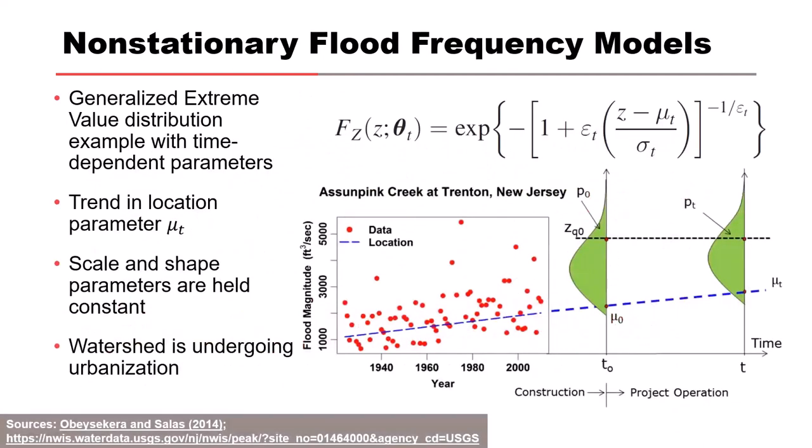Here's what non-stationarity looks like. This is a basic example showing flood magnitude — annual instantaneous peaks over time with a trend line fit to it — and a summary of distributions from the beginning to the end point. In this hypothetical example, they kept the scale and shape parameters the same, but the location has changed between the beginning and end of the project. This shows that on average, the mean is going up and we're experiencing higher flows than in the past.